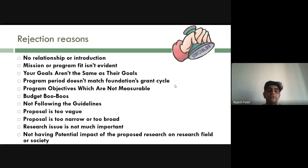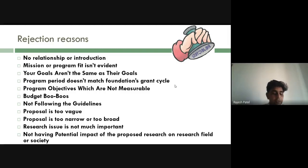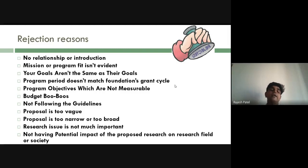Proposals can also be rejected due to time duration mismatch — if you claim three years but the grant is available for two years only, it won't be accepted. Reducing the timeline just to get the fund will also create problems, as the assessor will know the project cannot be completed in that time. Program objectives must also be measurable — they should follow SMART goals: Specific, Measurable, Reliable, and Attainable — with clear milestones after each phase.